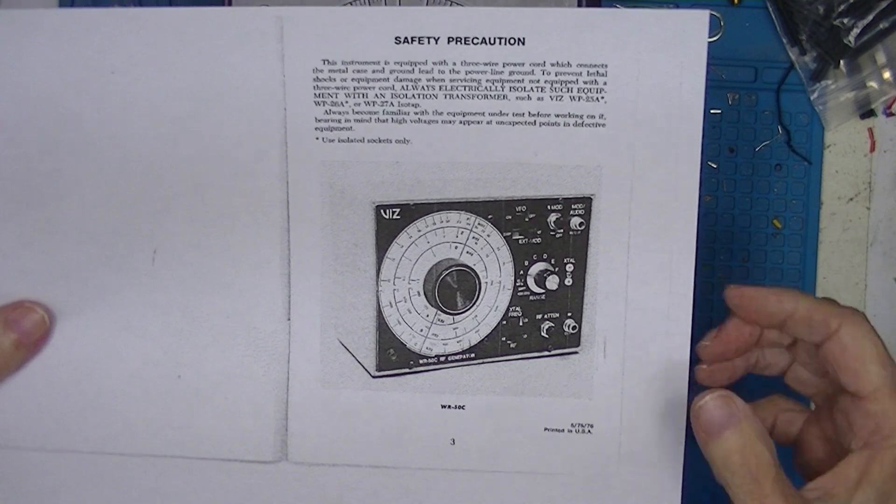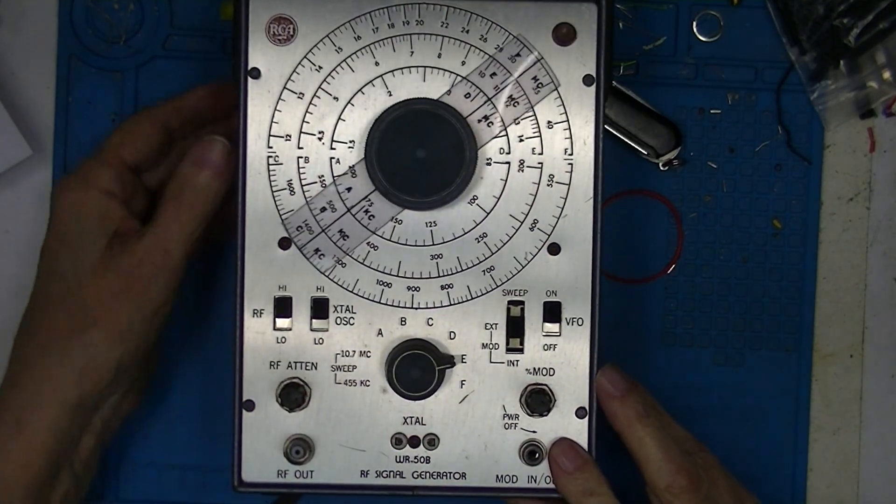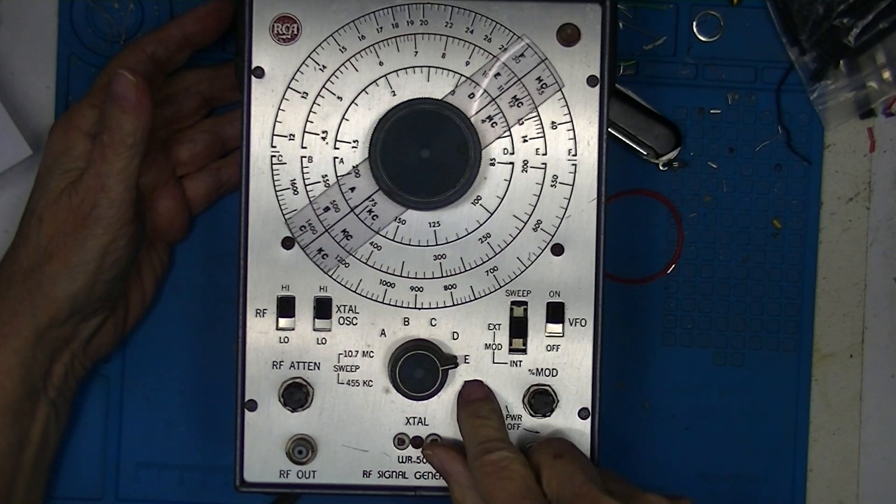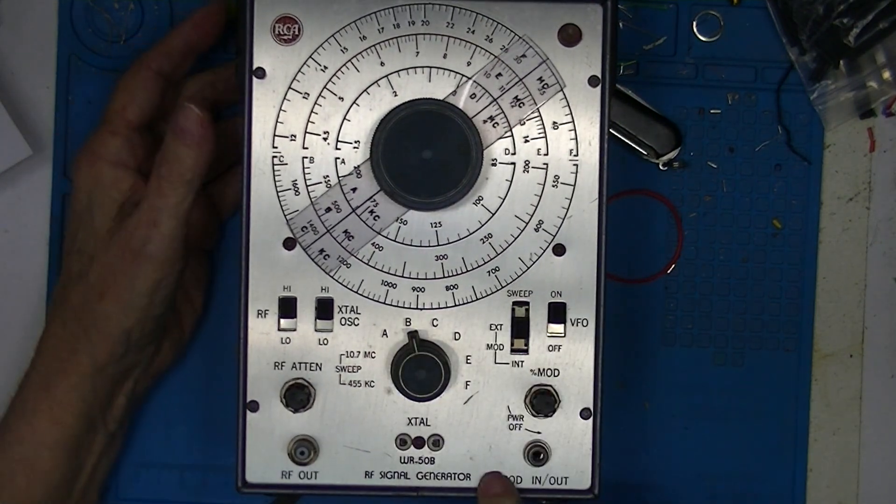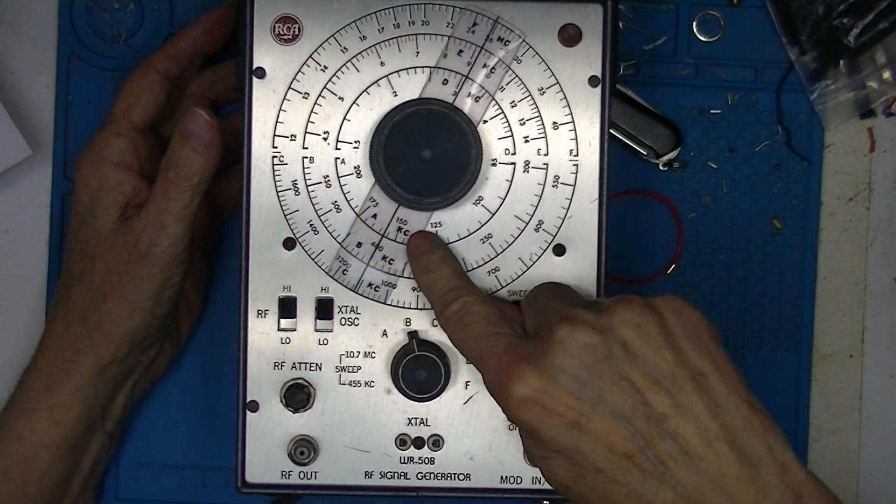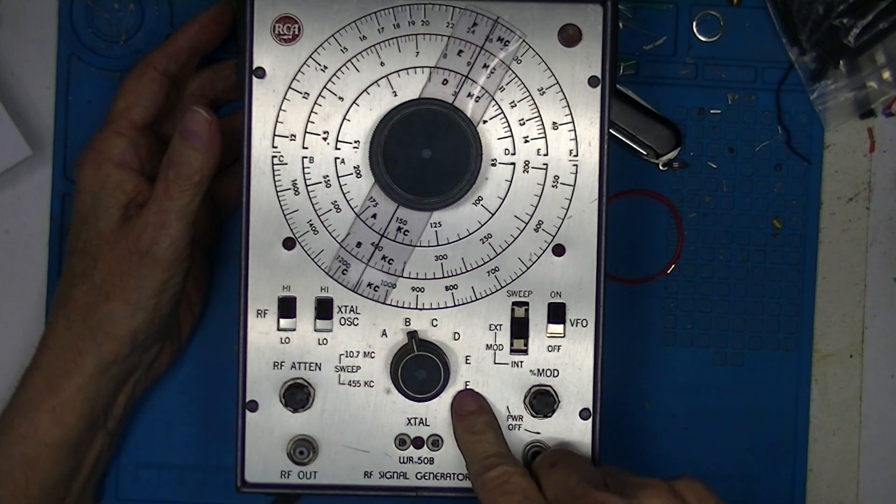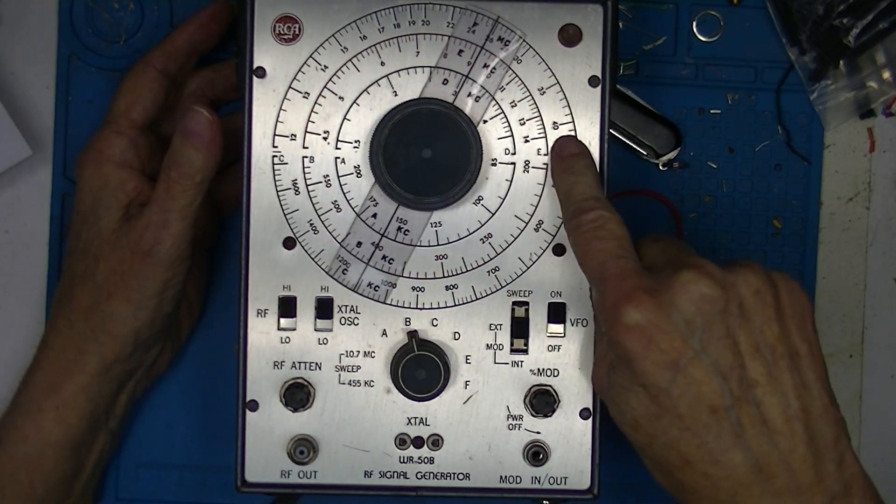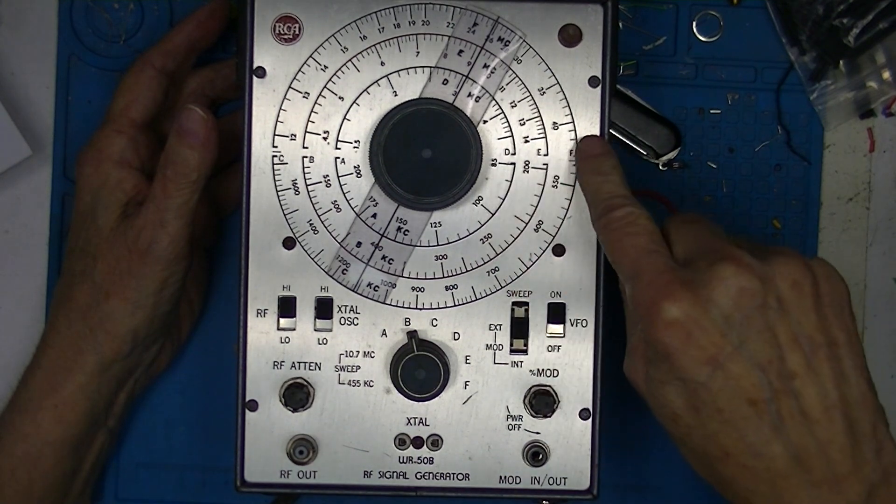This was taken from an instruction manual printed in '76. I know that this existed in '66, maybe a year or two earlier. Neglecting these sweep positions, this is a 6 positioned range switch A through F. A represents 85 kilocycles through 200 kilocycles. F represents 12 megahertz through 40 megahertz. So this frequency generator spans from 85 kilohertz to 40 megahertz.